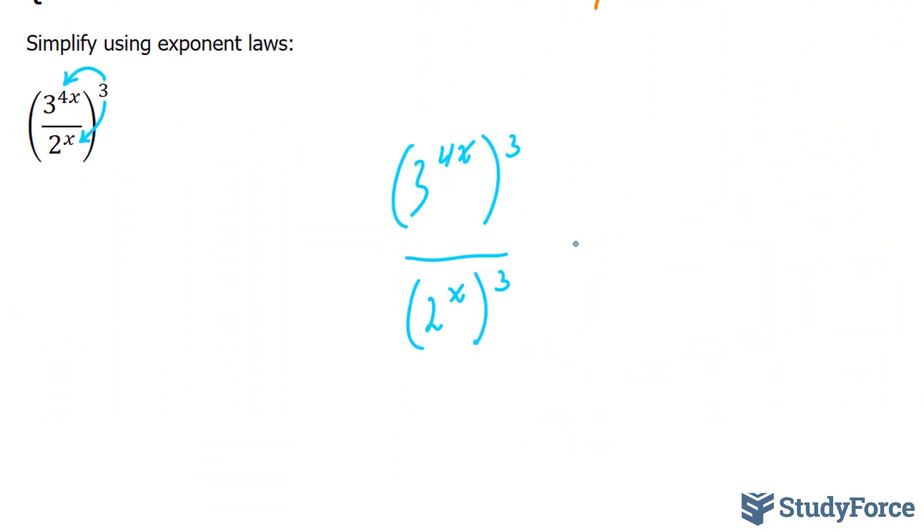So we end up with 4x to the power of 3, which is 12x. Notice that this stays the way it is. And x times 3 is 3x. And notice that the bases now are not identical. They're not the same. So that's all you can do. You cannot further simplify this expression.